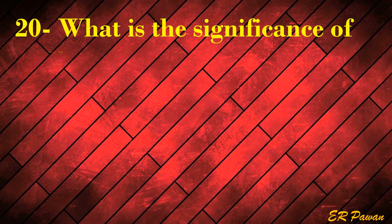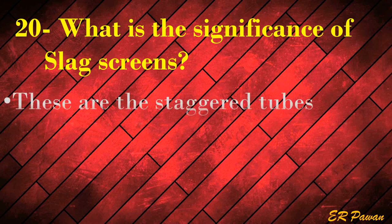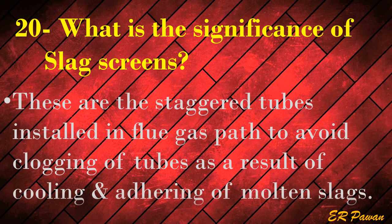Question 20: What is the significance of slag screens? These are the staggered tubes installed in the flue gas path to avoid clogging of tubes as a result of cooling and adhering of molten slags.